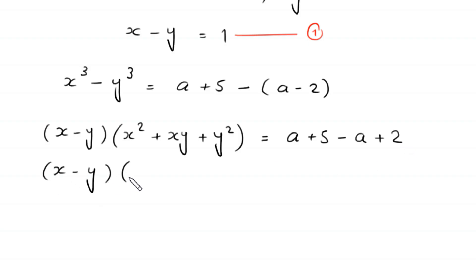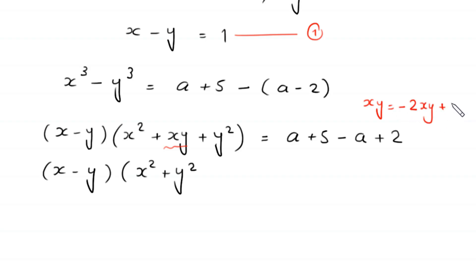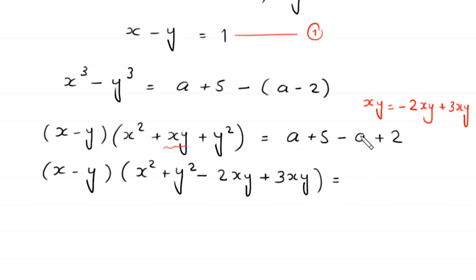So we have (x - y) times (x² + y²), and we can write xy as -2xy + 3xy. This becomes (x - y) times (x² - 2xy + 3xy). The -a and +a cancel, and 5+2 becomes 7.